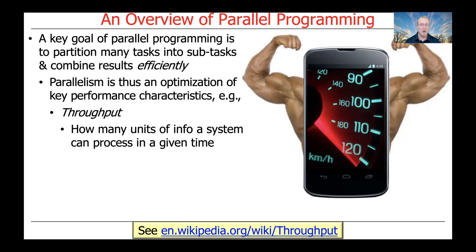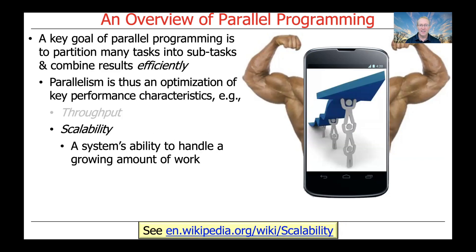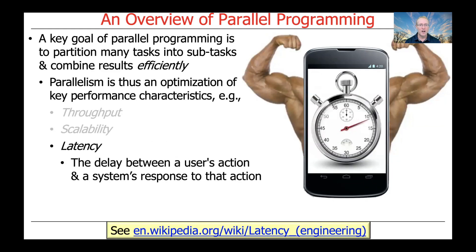Here are some of the key performance characteristics that are relevant in the context of parallelism. The first is throughput, which is a measure of how many units of information a system can process within a given timeframe. The second is scalability, which is a measure of a system's ability to handle a growing amount of work — the system can auto-scale as the workload goes up. And the third is latency, which is a measure of the delay between a user's action and a system's response to that action. The key point is that parallelism can help improve throughput, scalability, and decrease latency.